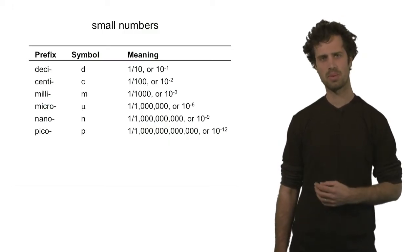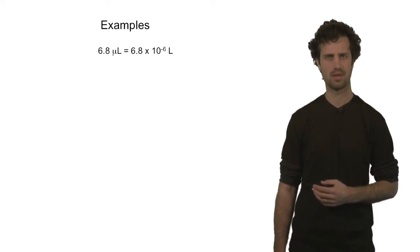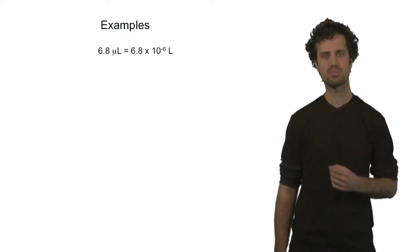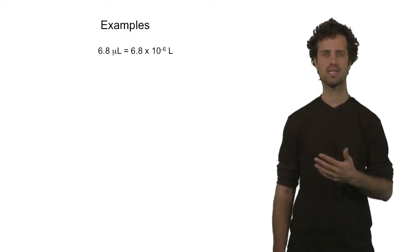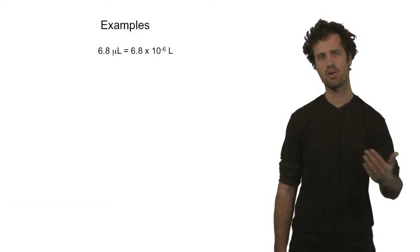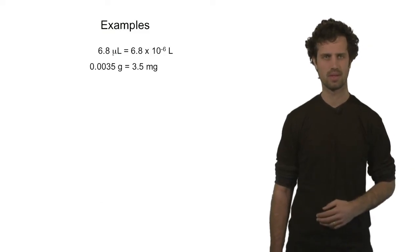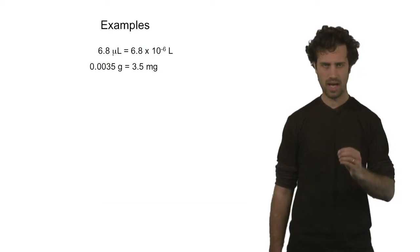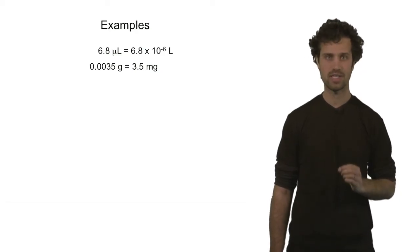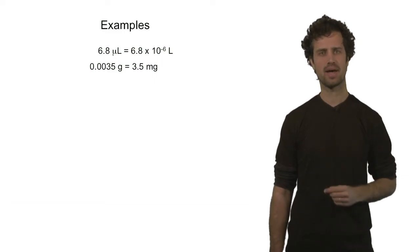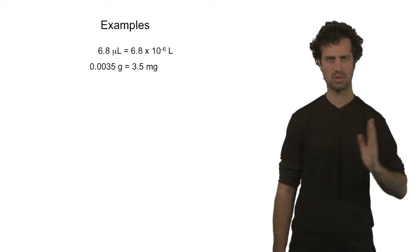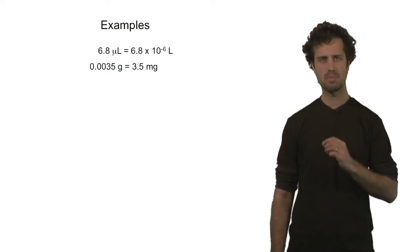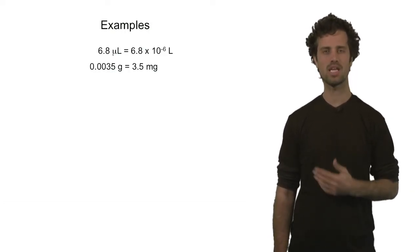Let's use these numbers in a couple of examples. This number here, 6.8 microliters, can be written as 6.8 times ten to the minus six liters, because micro means ten to the minus six. The next number, 0.0035 grams, can be rewritten as 3.5 times ten to the minus three by moving the decimal point three places. Ten to the minus three means milli, and so this number is 3.5 milligrams.